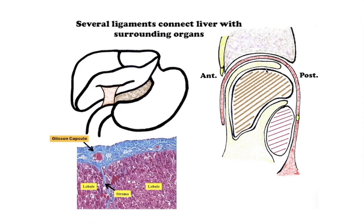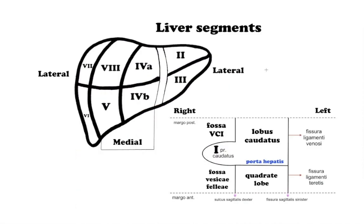Liver anatomy divides the liver into 8 functionally independent segments. Each segment has its own vascular inflow, outflow, and biliary drainage. The segments are: left lateral (2nd and 3rd), left medial (4a and 4b), right medial (8 and 5), right lateral (7 and 6), and the first segment is the caudate process.